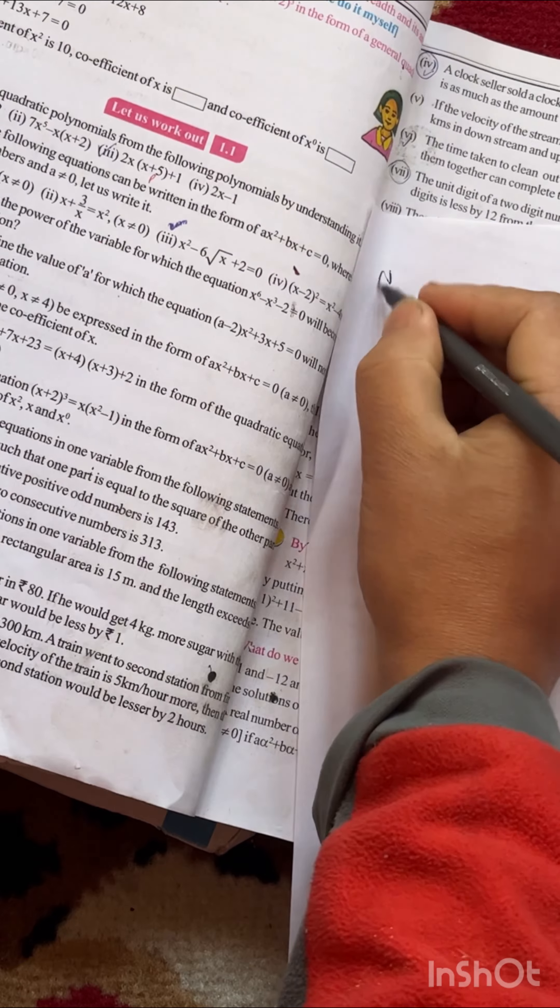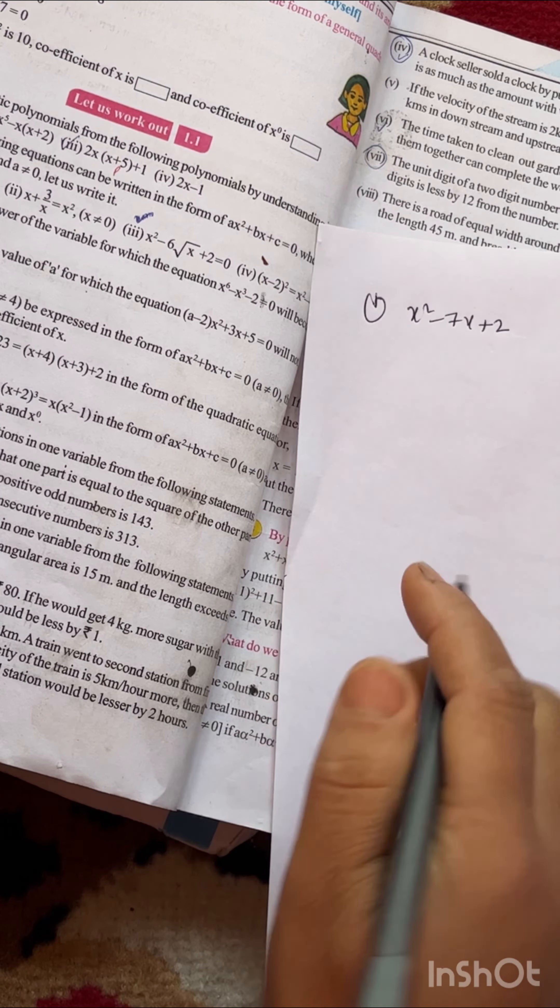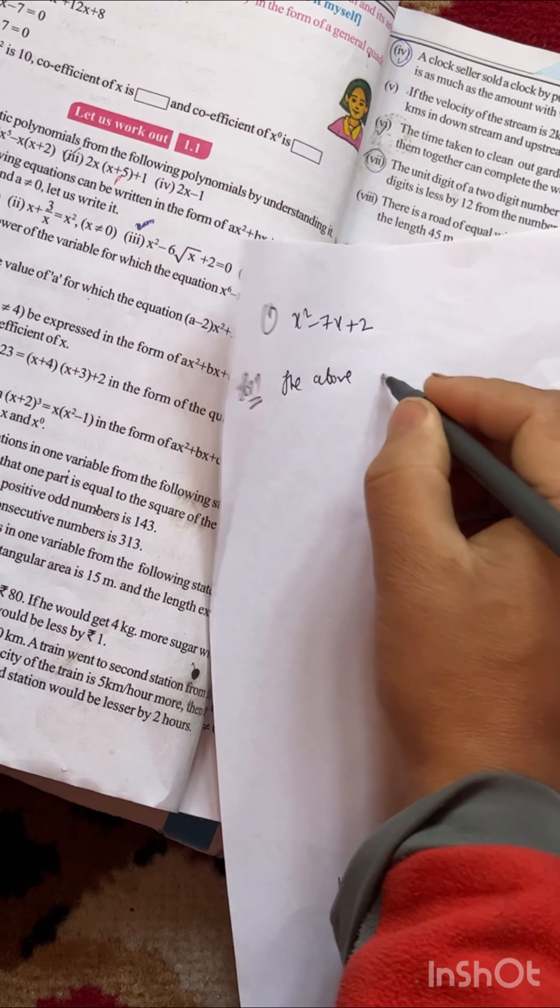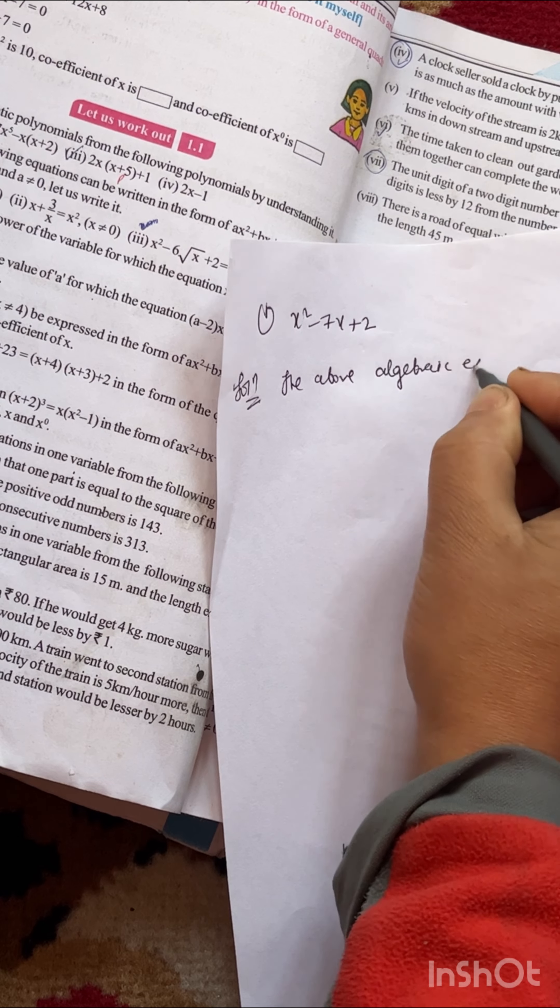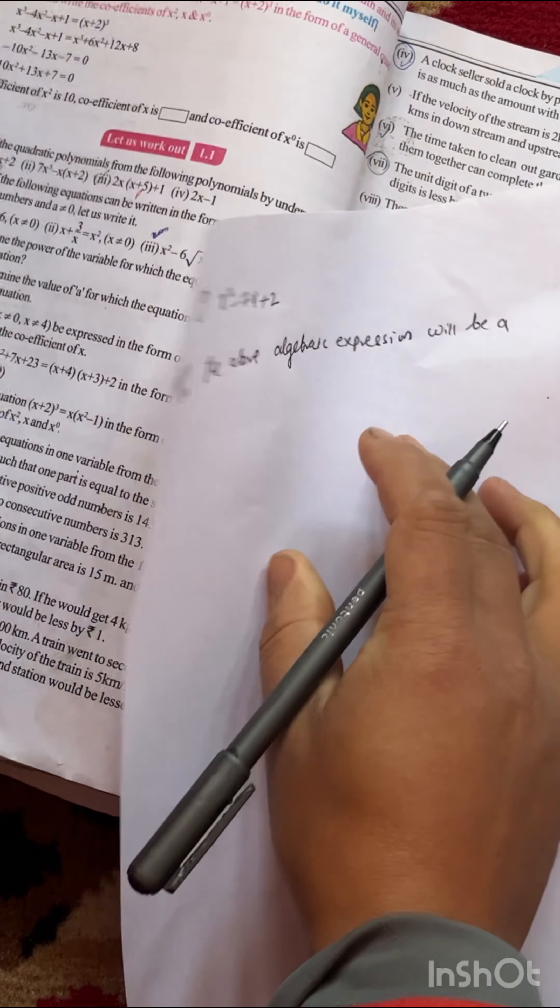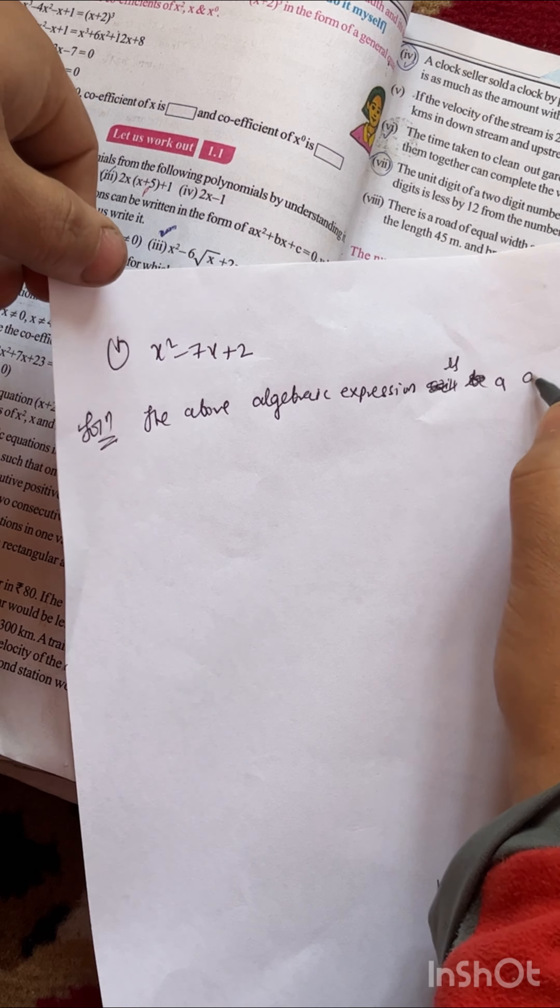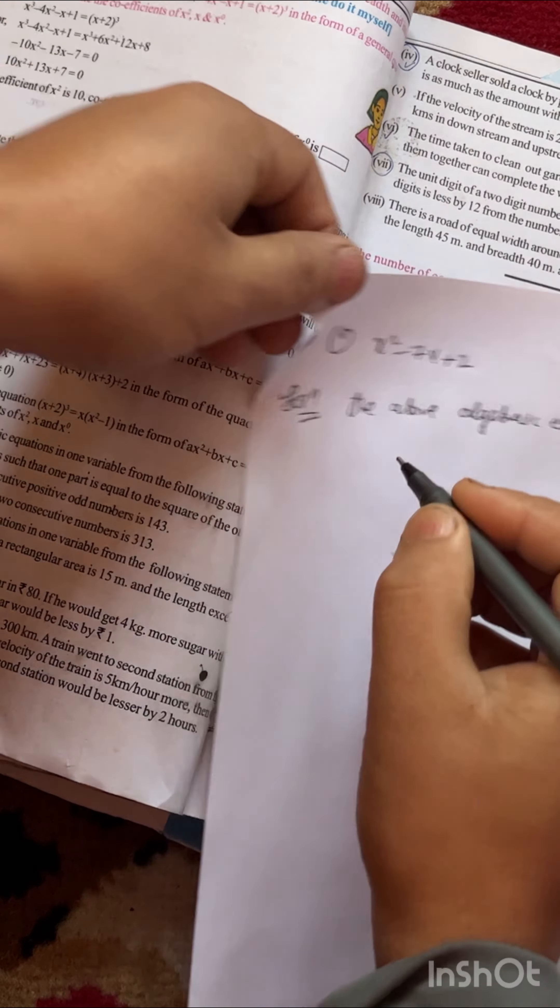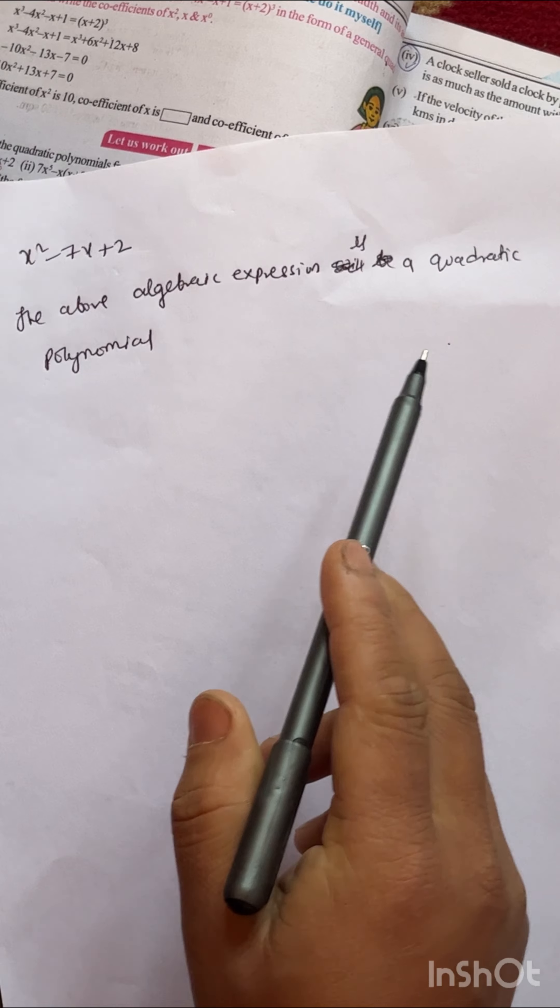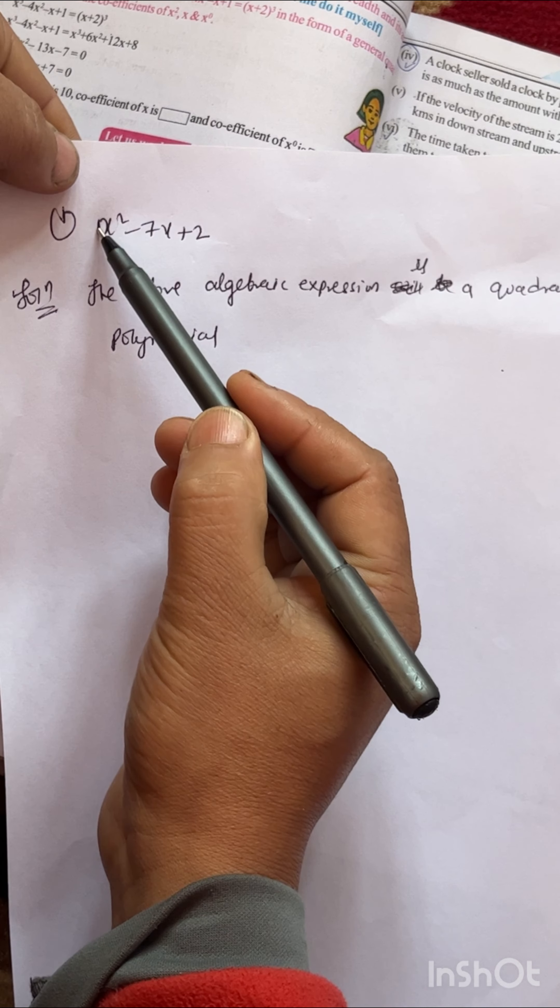Now I will check if this algebraic expression is quadratic. The algebraic expression is a quadratic polynomial if the highest power of x is 2. Here we have x², so this is quadratic.